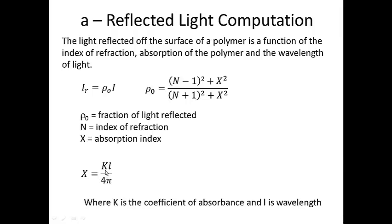The absorption index is equal to k, a coefficient of absorption which is a material property, times the wavelength of light divided by 4 pi, as shown here. Also keep in mind that the index of refraction can also be a function of wavelength of light, as was shown in part one, but for many polymers we assume that the index of refraction is constant.